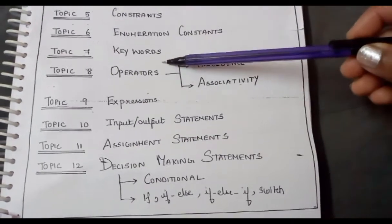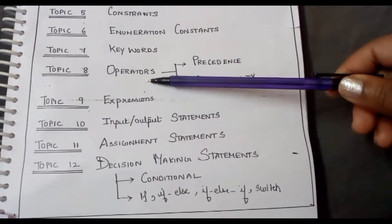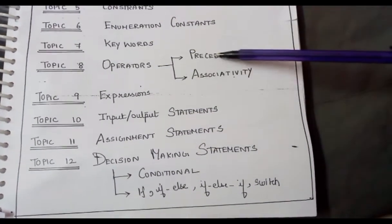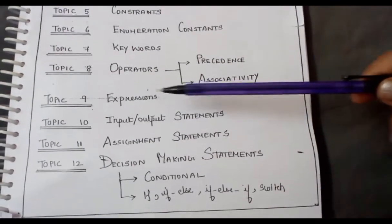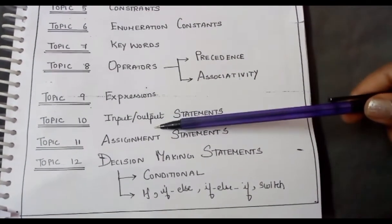Topic 7 is keywords, topic 8 is operators which has precedence and associativity, topic 9 is expressions, and topic 10 is input output statements.